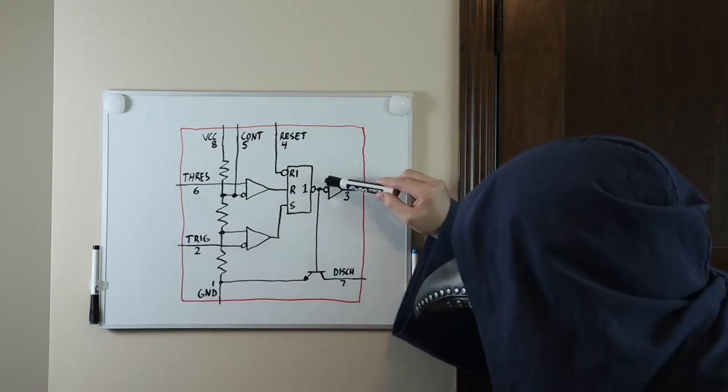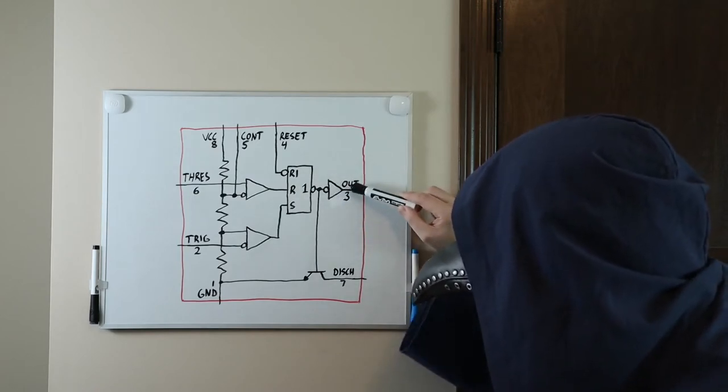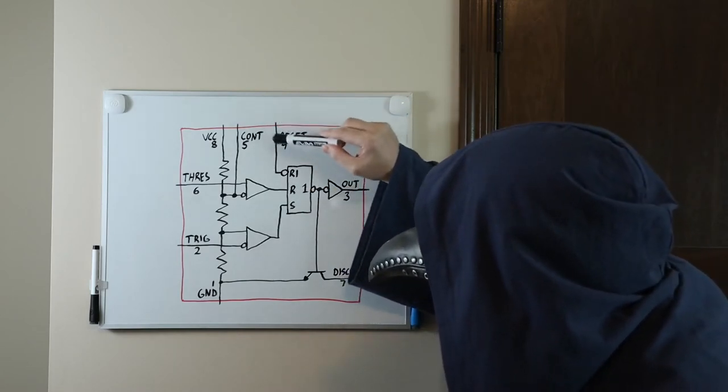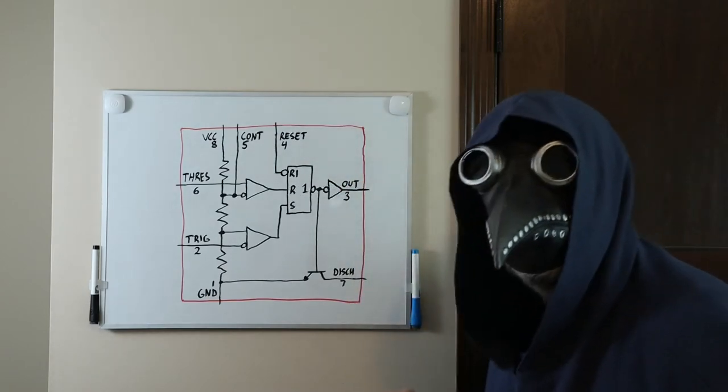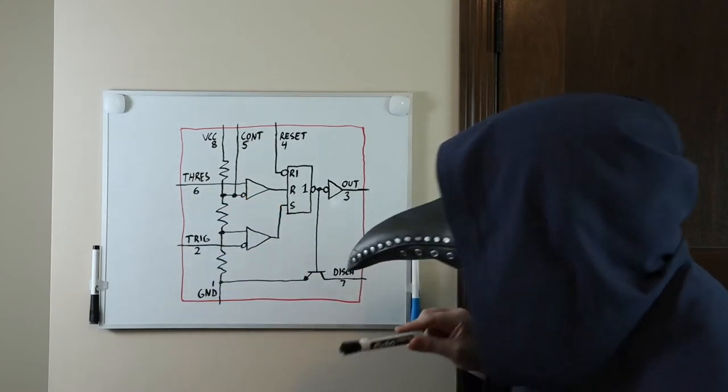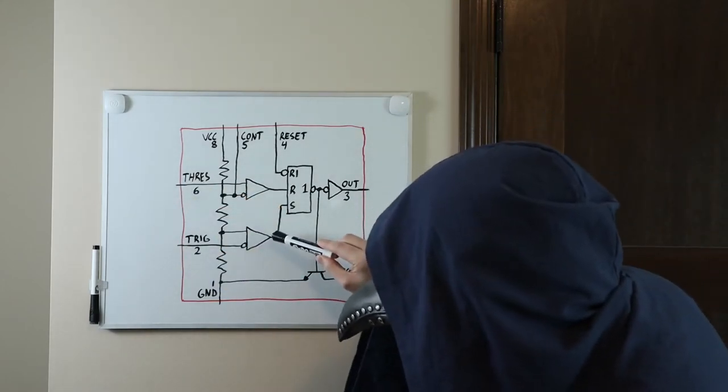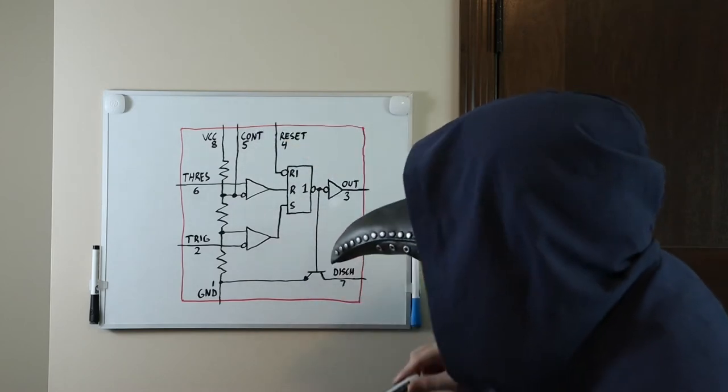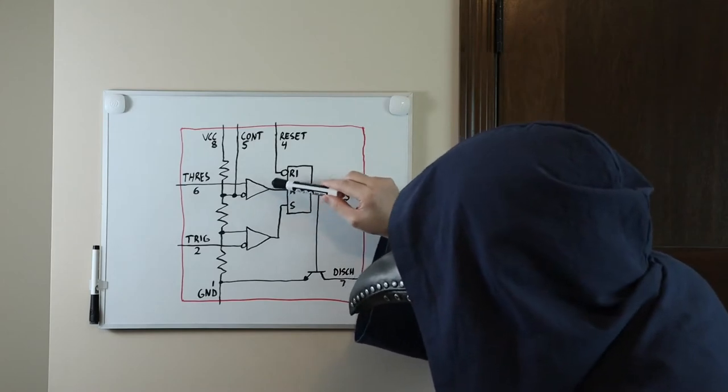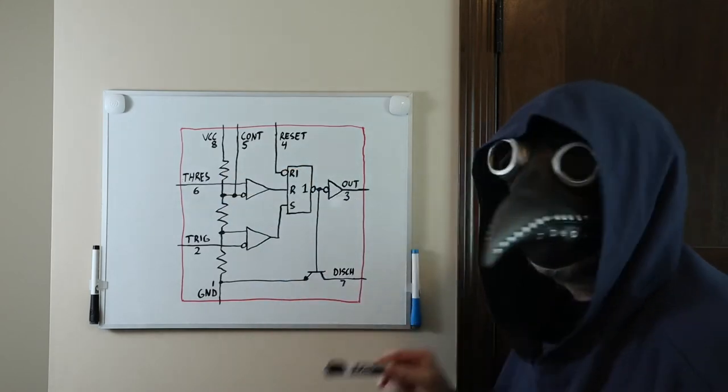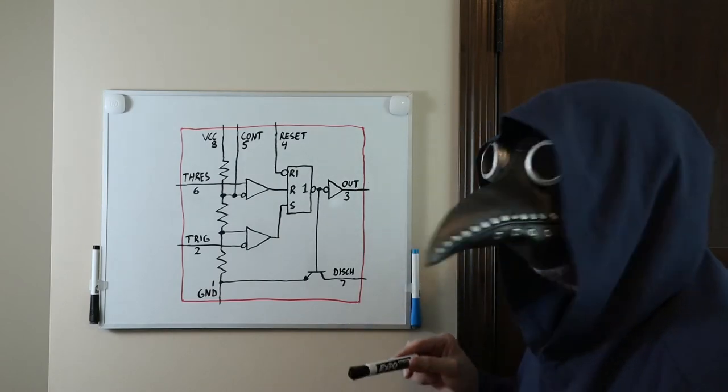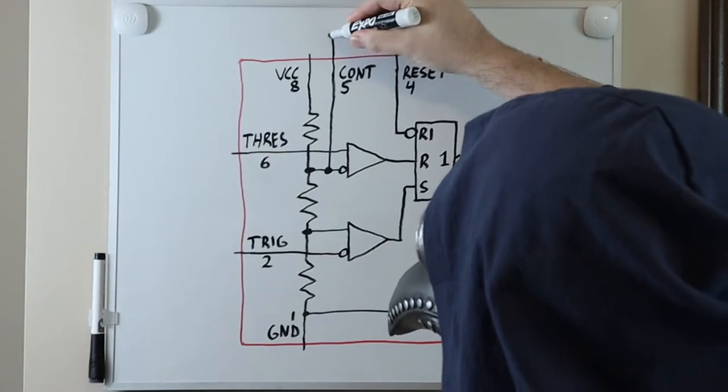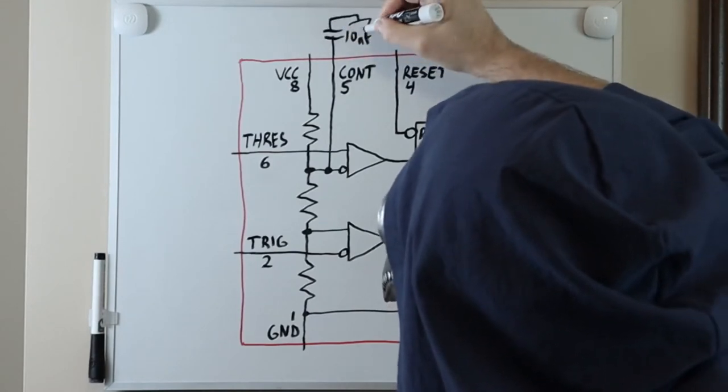Notice that the output of the flip-flop then goes through an inverter, so that the output pin here goes high when set goes high, and goes low when reset goes high. And, I'm not talking about this reset pin, but rather, the reset on the flip-flop. Now, we have two inputs here, a trigger and a threshold pin. The output of this comparator goes high whenever the voltage on the trigger pin is lower than one-third VCC, assuming the control pin isn't overriding the voltages.